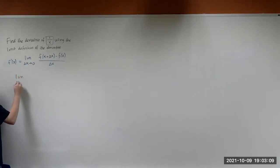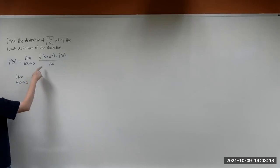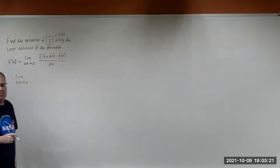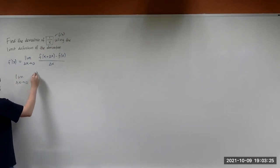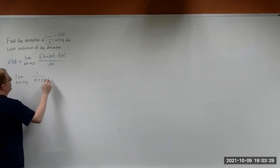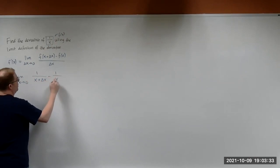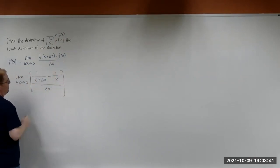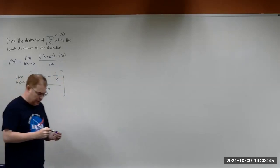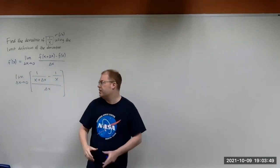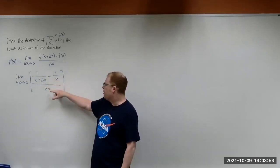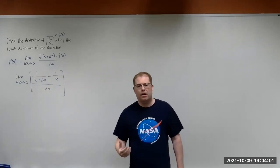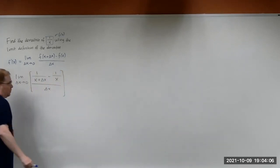We're going to have the limit as delta x goes to zero of — we're evaluating the function at x plus delta x, so you replace the x with x plus delta x — we're going to have one over x plus delta x, minus the original function, one over x, all divided by delta x. It's always a good habit, when you have a compound or complex fraction like this, to put parentheses or brackets around that expression — it looks more organized.